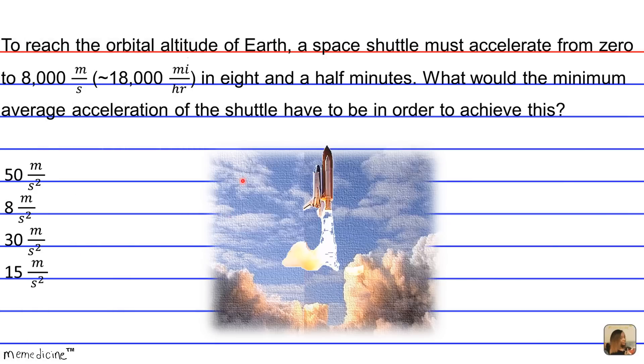So we're given time, eight and a half minutes, and the final velocity. And we know the initial velocity is 0 as well. So because we have those three knowns, we can use this kinematics equation.